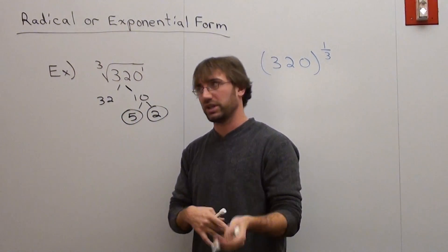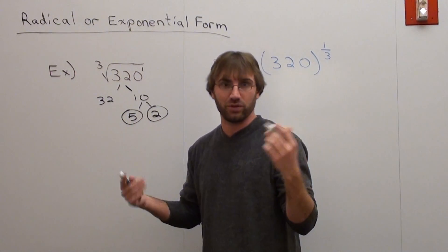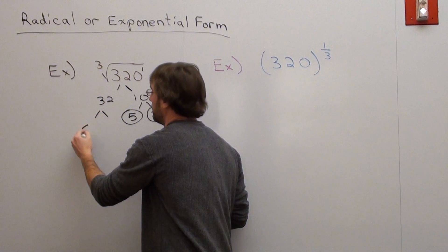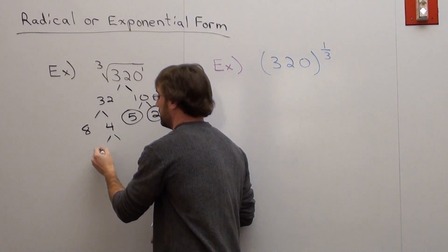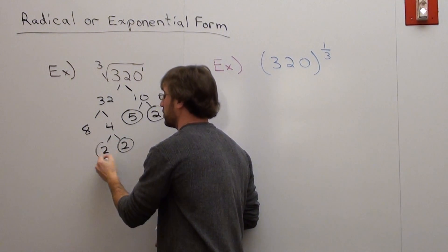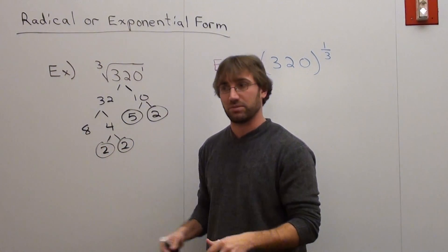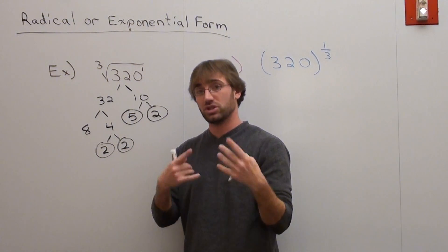When you split 32, you split it into 8 and 4. Circle the primes. Don't circle the composite numbers. The composite numbers are the numbers you can split. Only circle the primes.